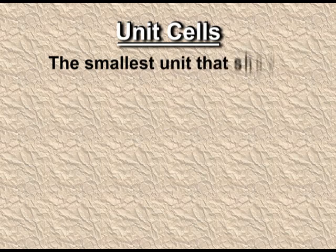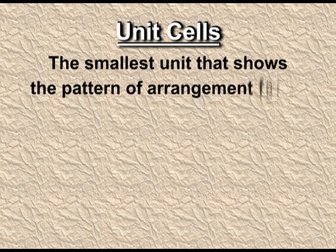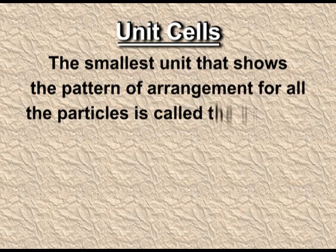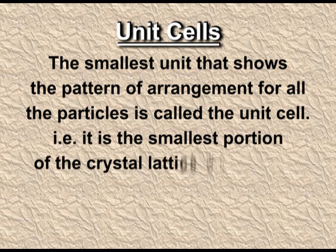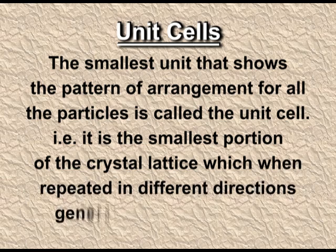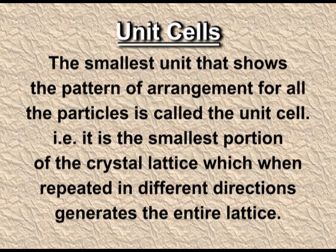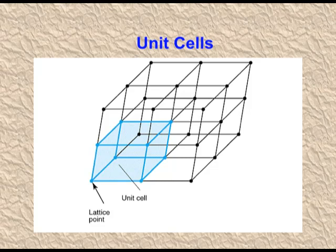Let's define the unit cell. The smallest unit that shows the pattern of arrangement for all the particles is called the unit cell. It is the smallest portion of the crystal lattice which, when repeated in different directions, generates the entire lattice. In the picture, the blue shaded portion is a unit cell — when repeated in three dimensions, we get the entire crystal lattice.